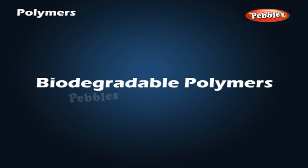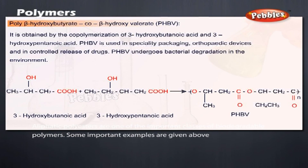Biodegradable polymers: Aliphatic polyesters are one of the important classes of biodegradable polymers. Some important examples are given above.